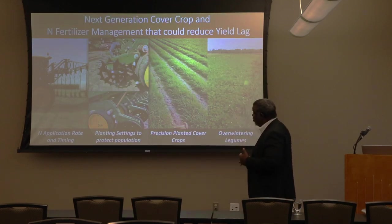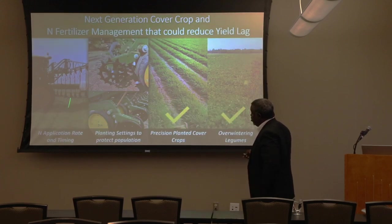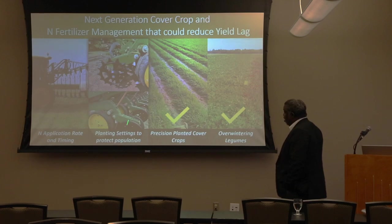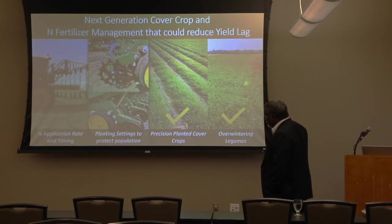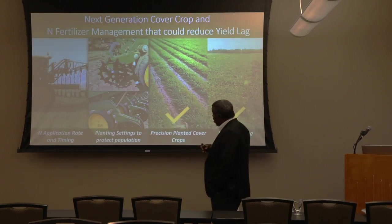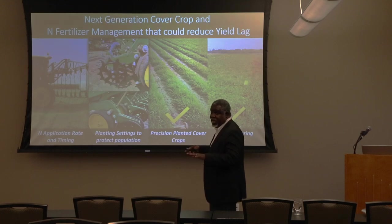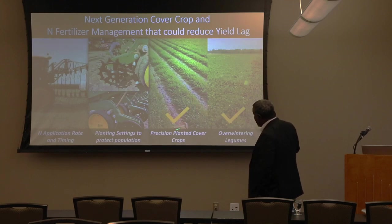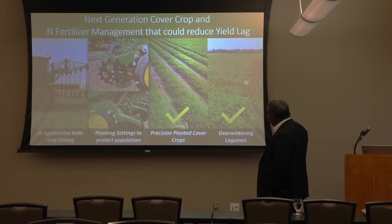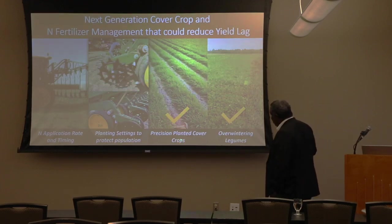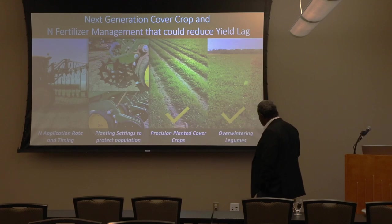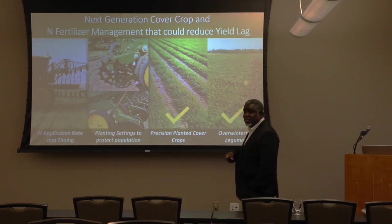That brought my group to the conclusion that we need next-generation management to increase our nitrogen uptake efficiency for that corn, because planting cover crops and losing yield is not sustainable. We started looking at different practices. Today I'll talk about two: precision planted cover crops, and the inclusion of overwintering legumes. Could we use a legume to fix nitrogen from the atmosphere that offsets what we need as fertilizer?